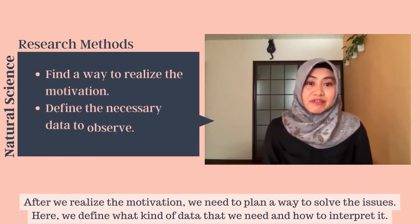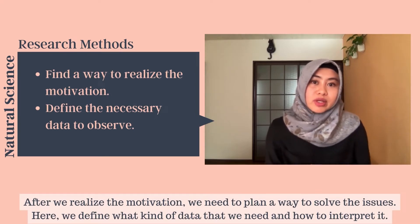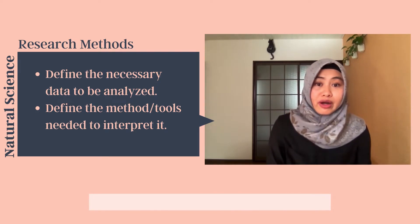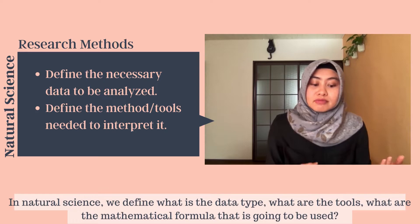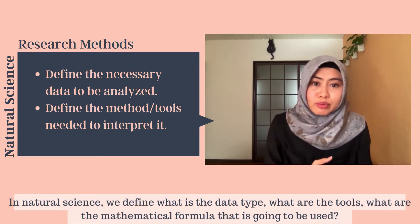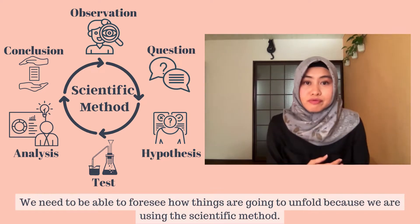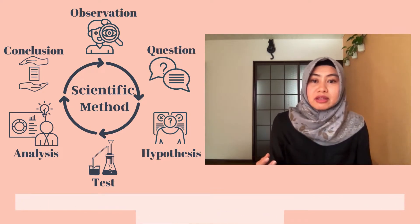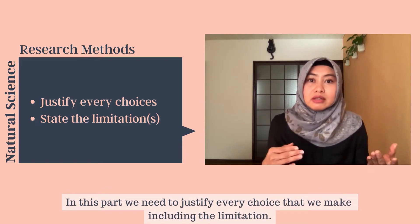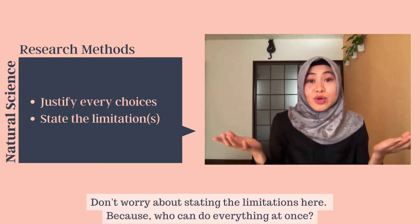After we realize the motivation, we need to plan a way to solve the issues. Here, we define what kind of data we need, how to interpret it, and whether you need any specific tools or software. In natural science, we define what is the data type, the tools, and the mathematical formulas we are going to use. We need to be able to foresee how things are going to unfold because we are using the scientific method. In this part, we need to justify every choice that we make, including the limitations. Don't worry about stating your limitations here — who can do everything at once?